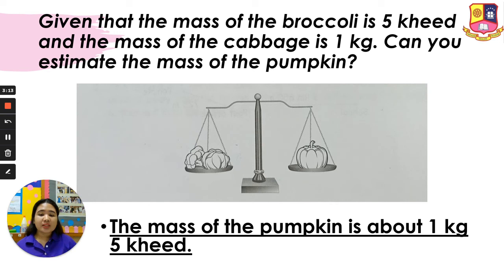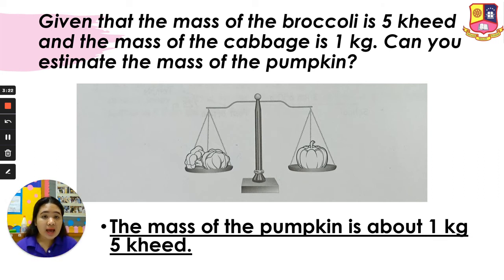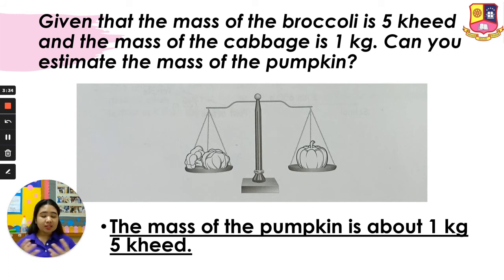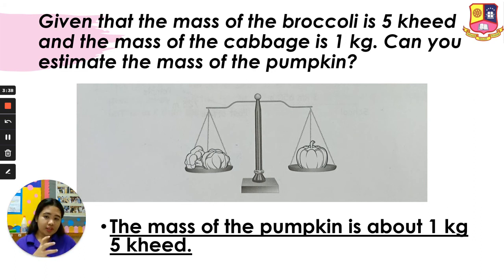The mass of the pumpkin is about 1 kilogram and 5 kid. Why? Because we cannot add kilogram and kid together — we cannot have an answer like 6 kid or 6 kilogram. No. Because they are different measurements, that's why we keep them separate: 1 kilogram and 5 kid. So the mass of the pumpkin is about 1 kilogram 5 kid.